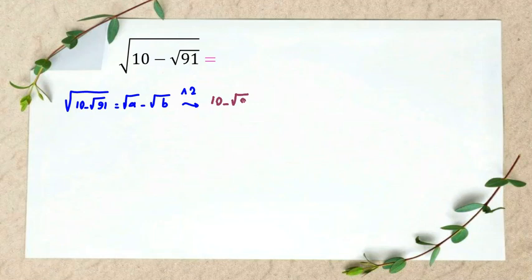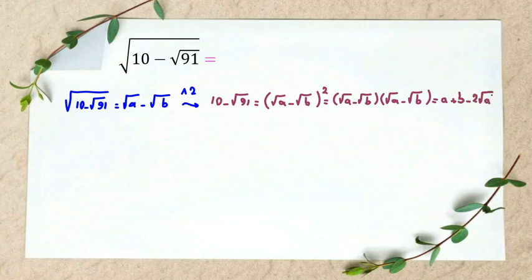Left is 10 minus square root of 91. Square root of a minus square root of b, both squared. You can write that square root of a minus square root of a, square root of a times square root of a, square root of a.